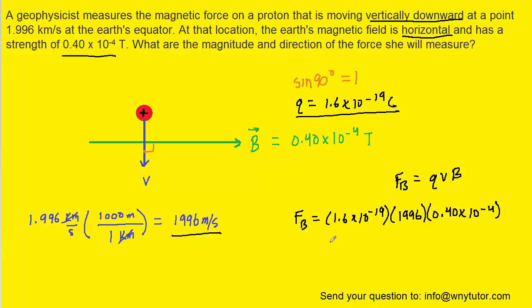We've plugged in the known values. We've omitted the units because we were running out of room. But when we calculate this magnetic force strength, we get approximately 1.28×10^-20, and the standard unit of force is newtons. So this is the correct answer for the magnitude of this magnetic force.